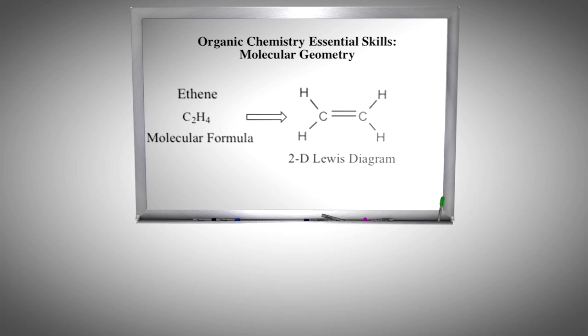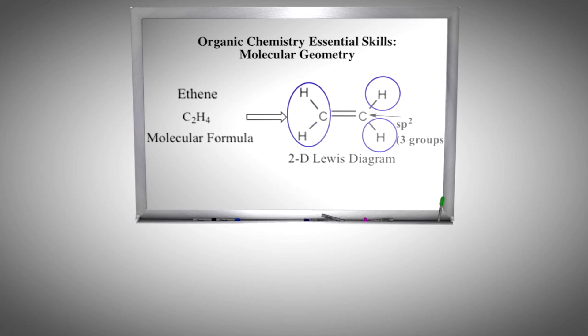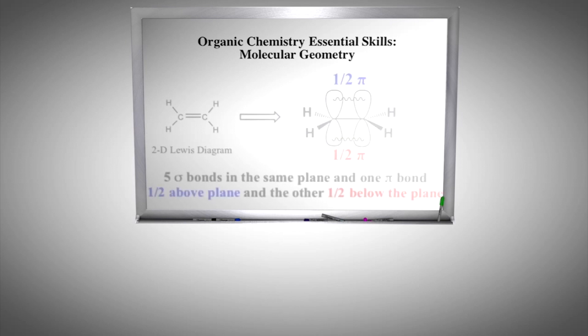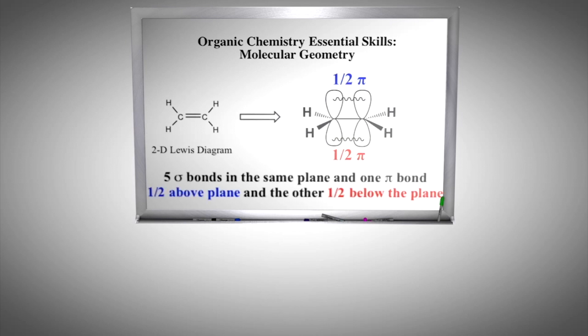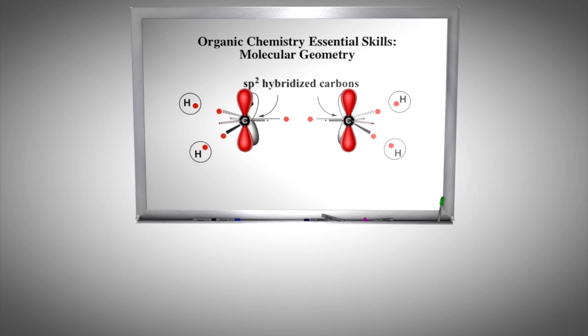A simple carbon compound that utilizes sp2 carbons is ethylene. From the two-dimensional Lewis diagram, we see that each carbon forms three sigma bonds and one pi bond. To fold the molecule into three dimensions, one simply counts groups on the central atoms, which has three groups around each central atom. Thus, both carbons are sp2 hybridized. Your instructor may draw ethylene on the blackboard utilizing sp2 building blocks.